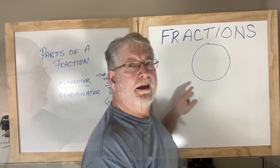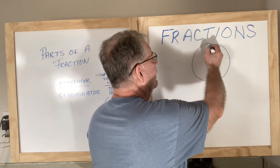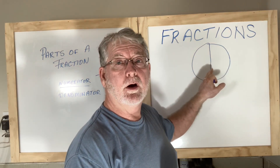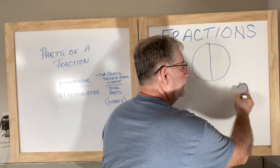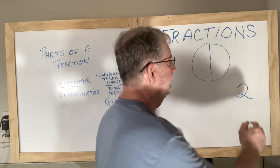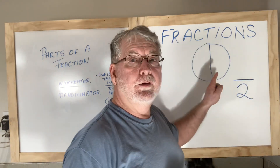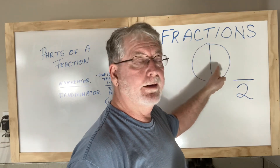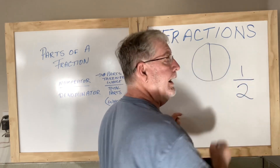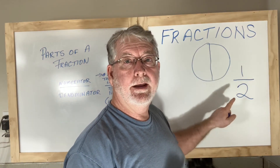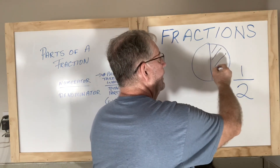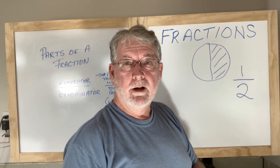Let me give you an example. If I have a circle and I divide it in half, now I have two different parts. Looking at that as a fraction, two is the total number of parts. The numerator is how many parts I take from this. So if I have one half, that would be one part taken from my total of two — that's that portion of the circle.